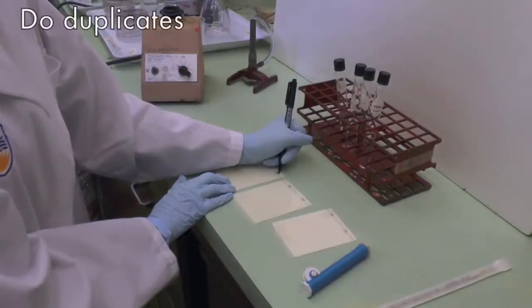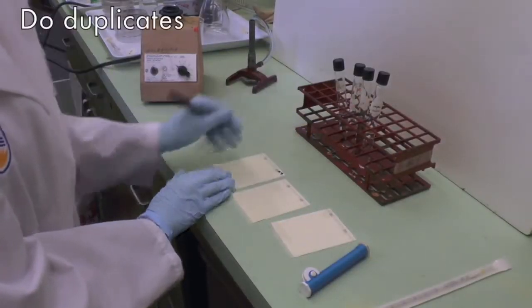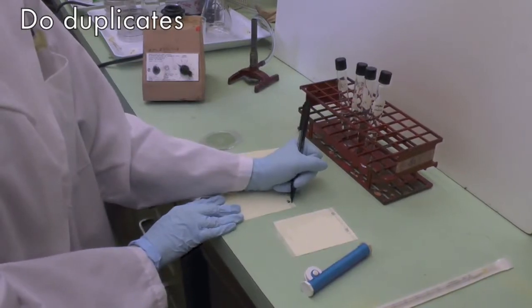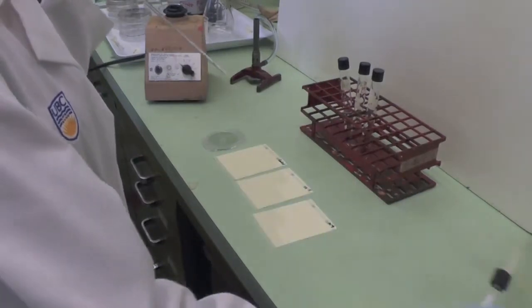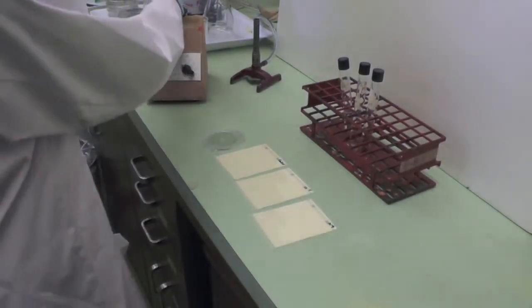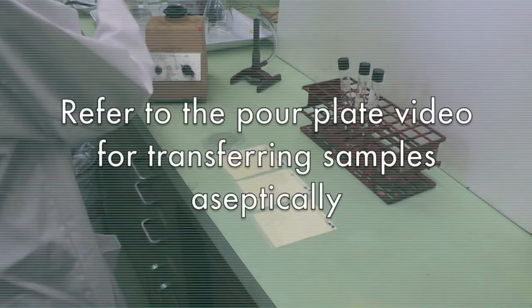Label the petri film with the sample dilution and peptone control you will use in duplicates. Always start with the peptone control, then work your way from the most diluted sample to the least diluted so you can use the same pipette.